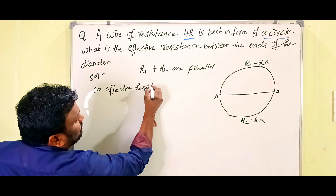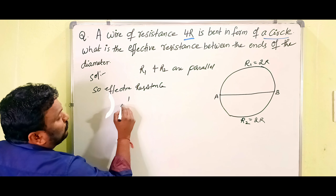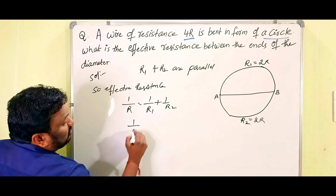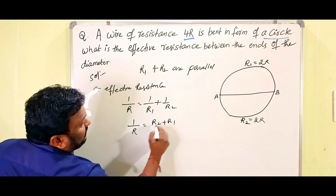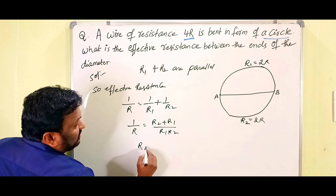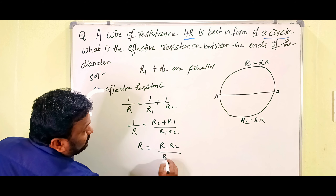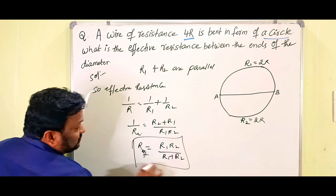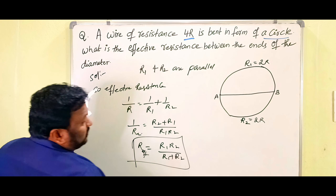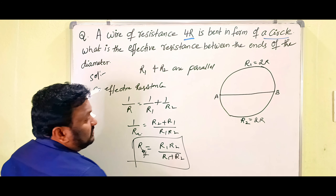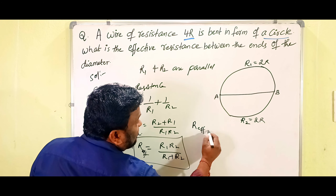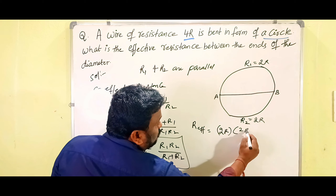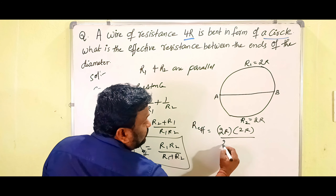The effective resistance formula for parallel combination is: 1/R = 1/R1 + 1/R2, which gives 1/R = (R2 + R1) / (R1 × R2), therefore R_effective = (R1 × R2) / (R1 + R2). This is the formula we are going to use.